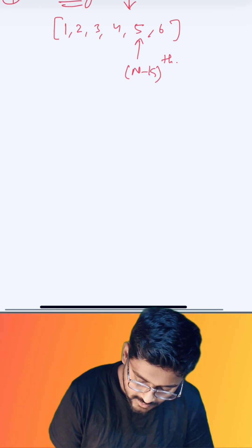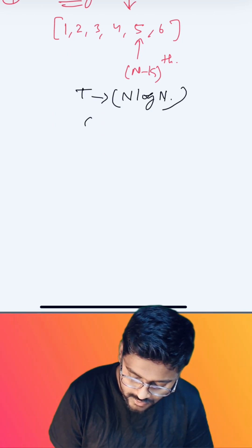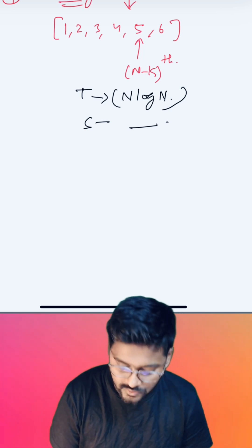But in this case, what is the time and space complexity? Time complexity will be order of n log n, and the space complexity is whatever space the sorting algorithm is using.